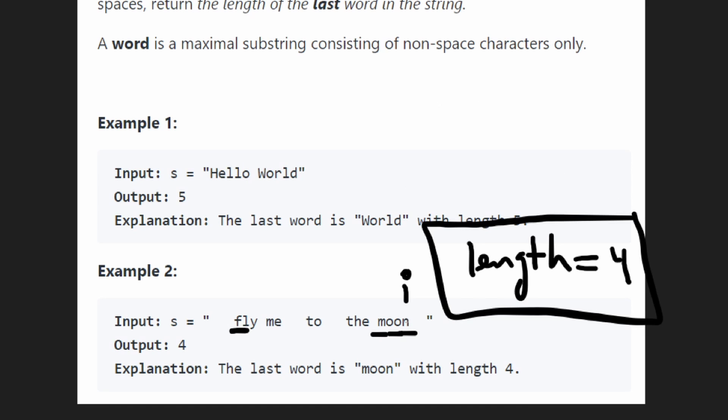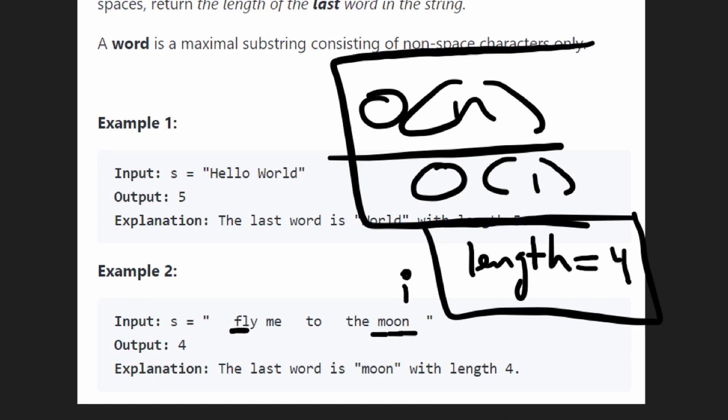Now, the time complexity, we might potentially have to iterate through the entire string if we have just a single word in the string. So the time complexity is going to be big O of N. There's no extra memory needed. Yes, we have a variable that's keeping track of the length, but it's just a single variable, nothing more. So the memory complexity is big O of one. So that's the solution we're going to be coding. So let's jump into that now.